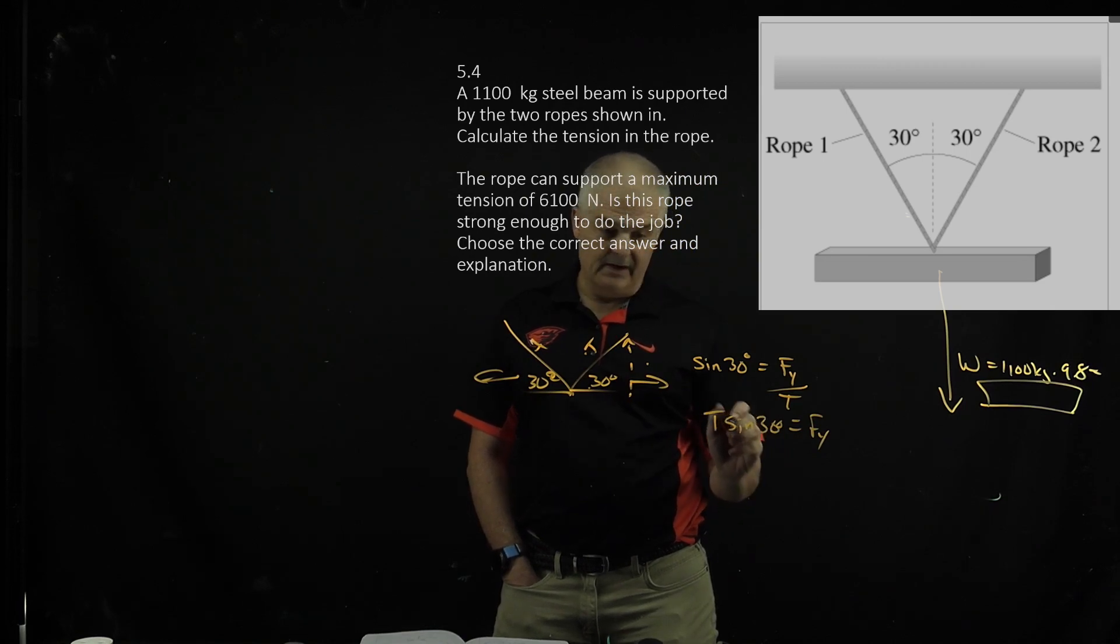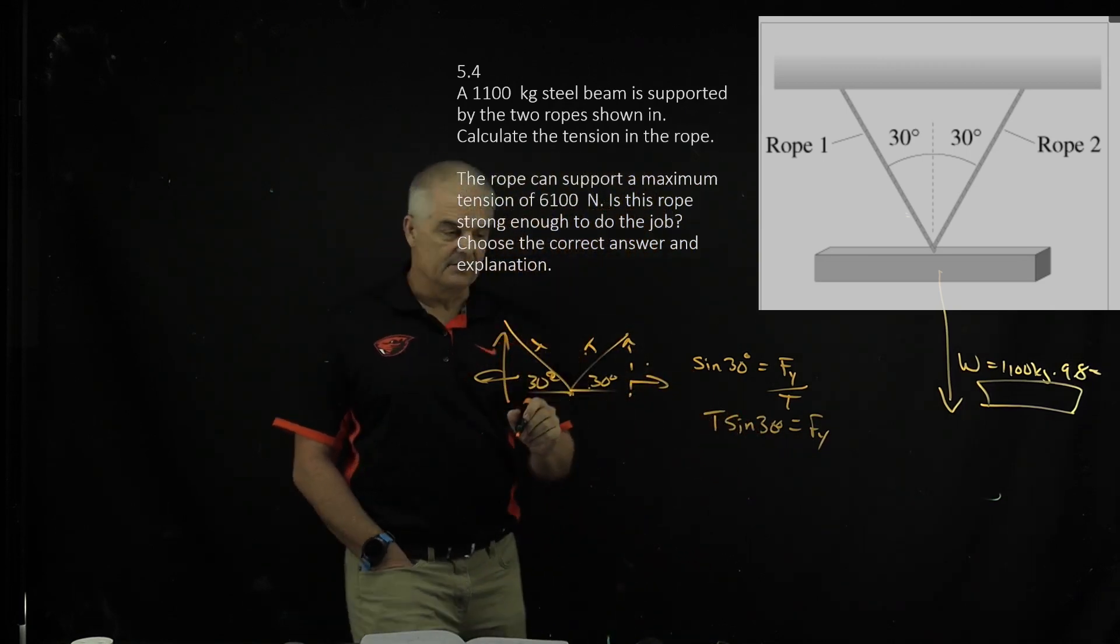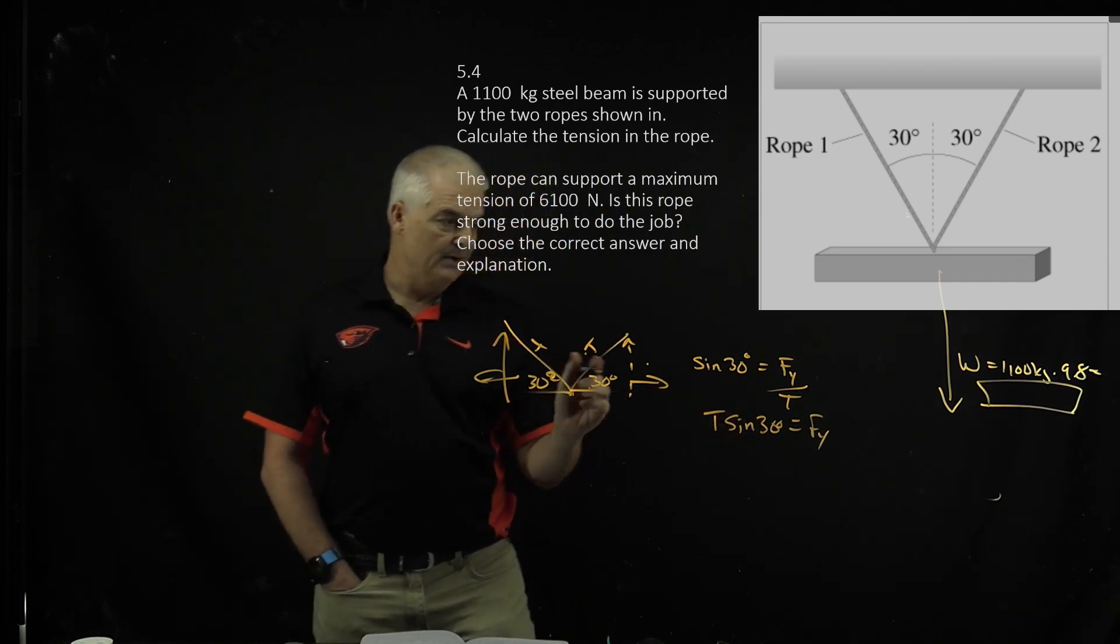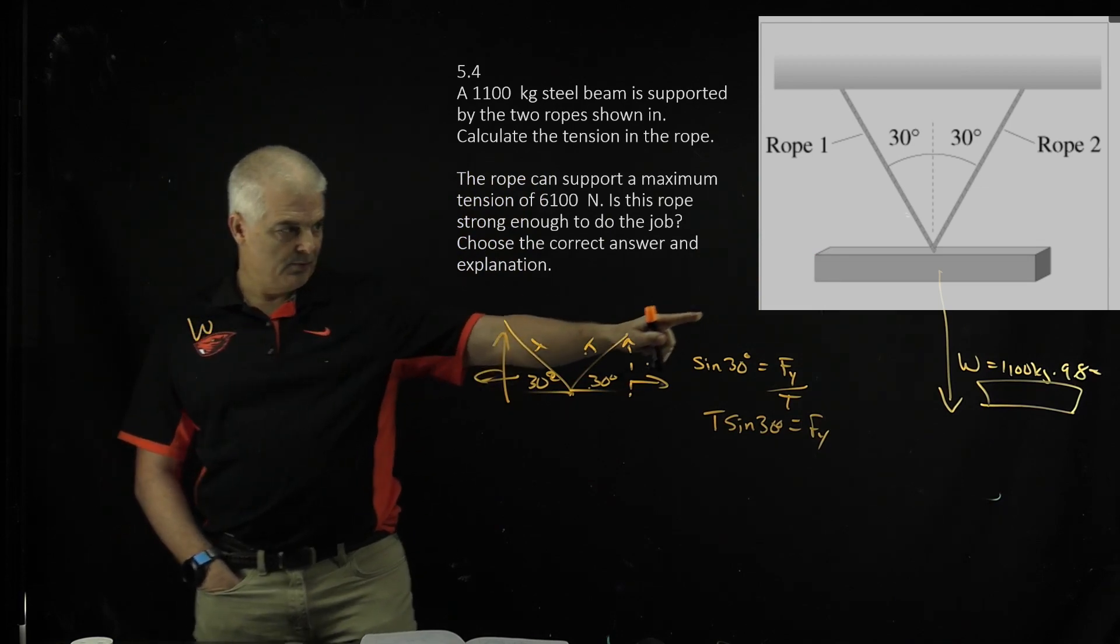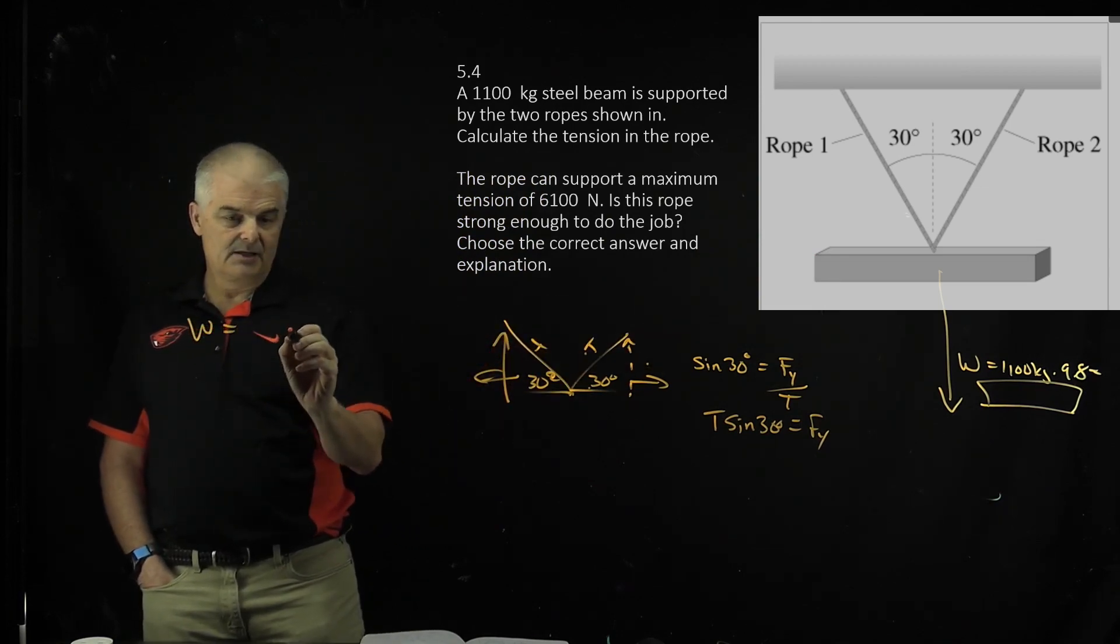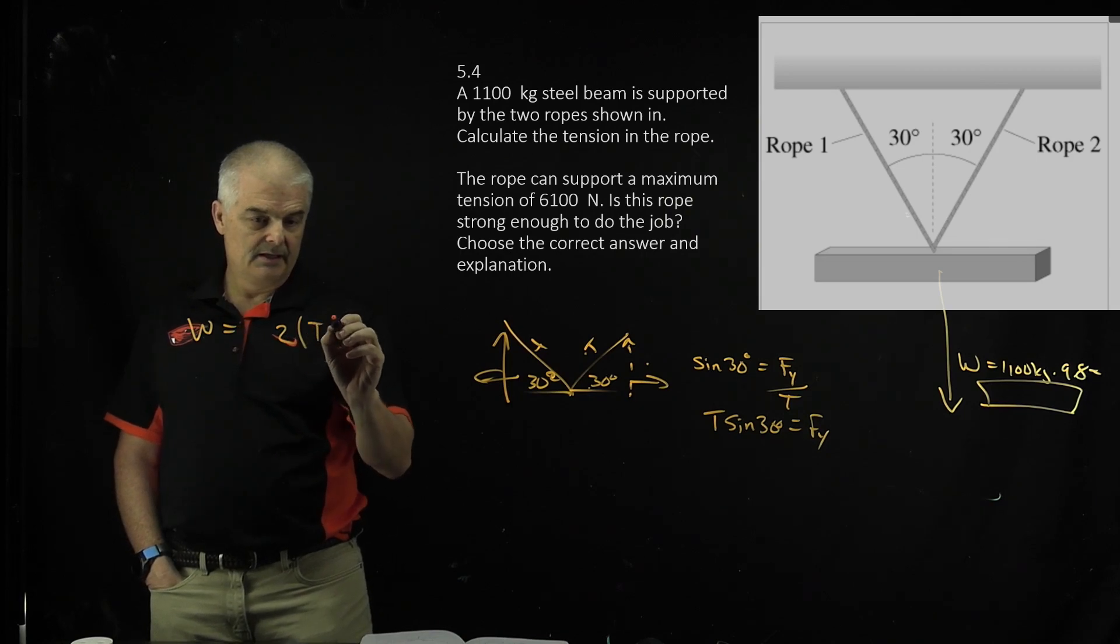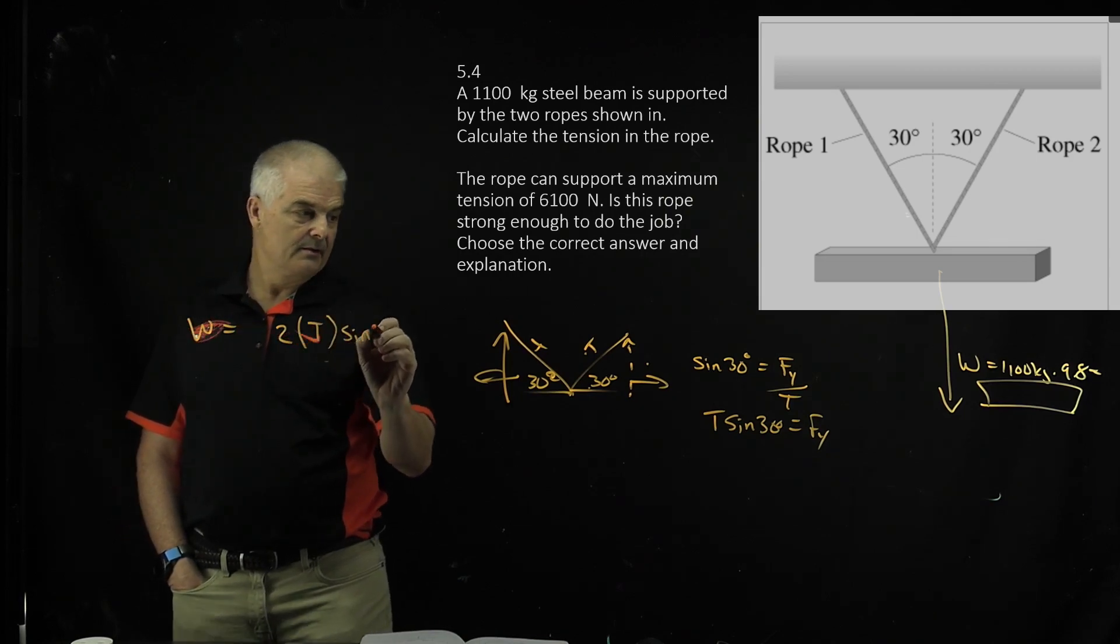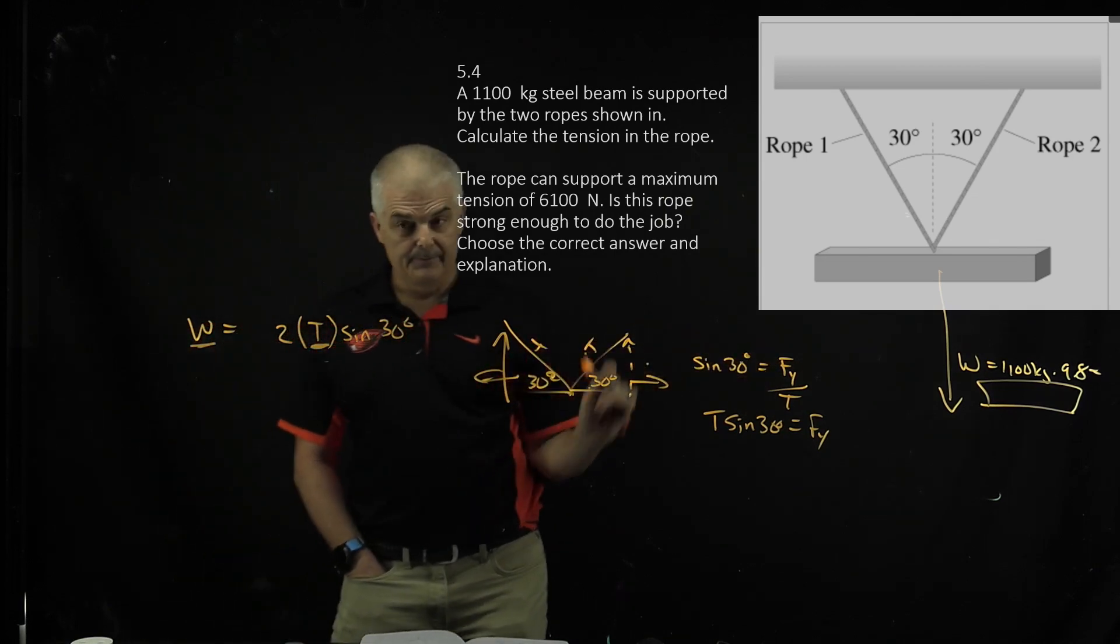But there's two of these, right? Because it's the exact same force here as it is here. And when I know that, I can then say that force downward, so the total weight, which is 9.8 times 1,000, has to equal 2 times T sine 30 degrees. You're solving for T. Weight you get from here, that's how you solve it.